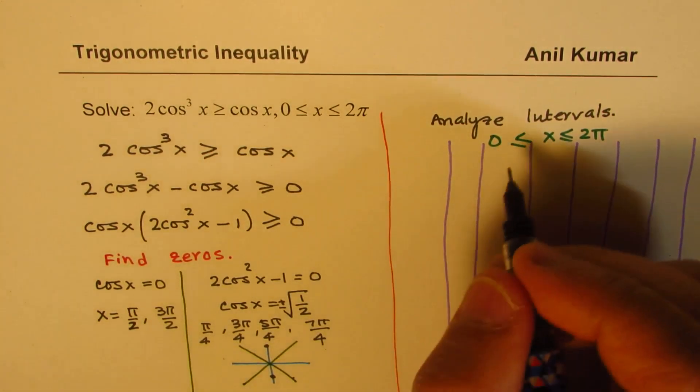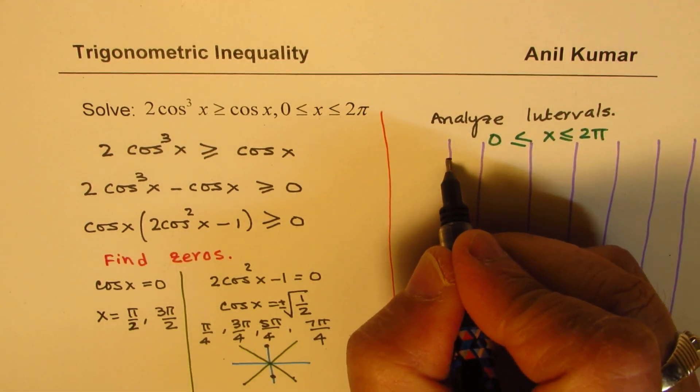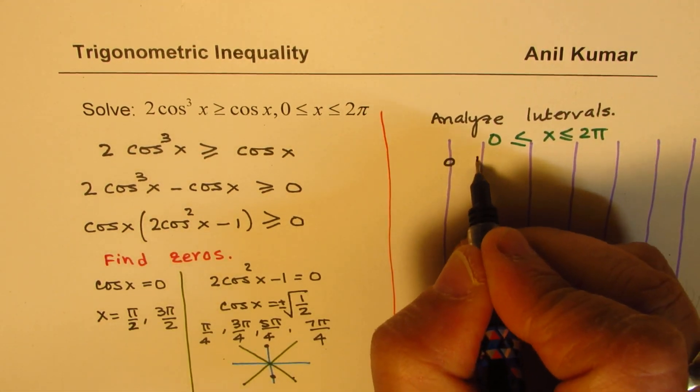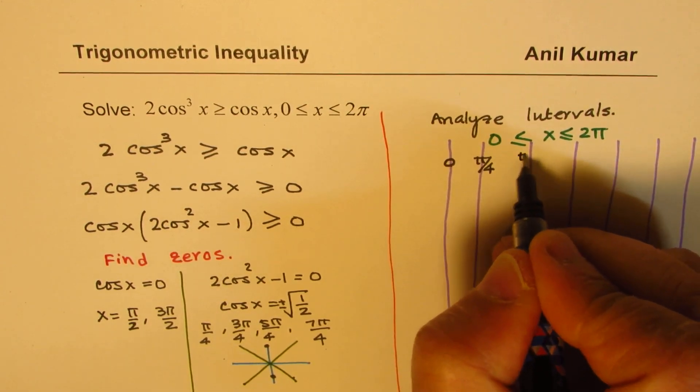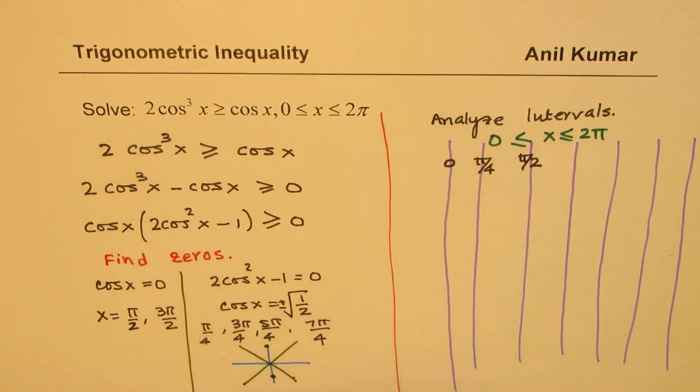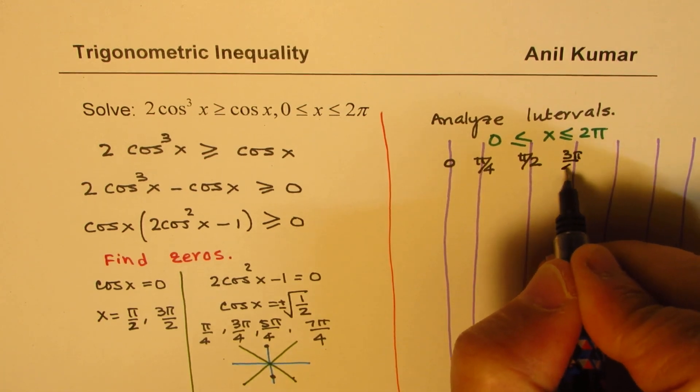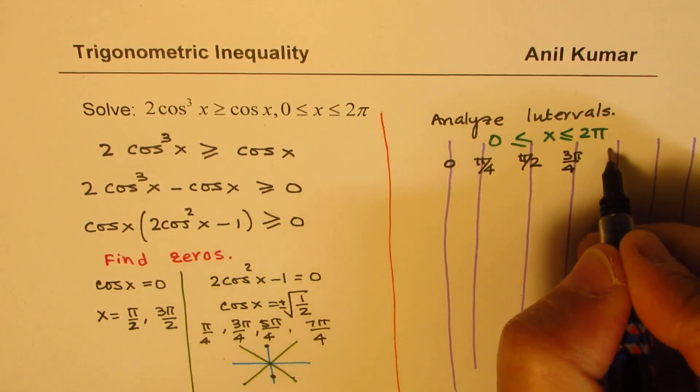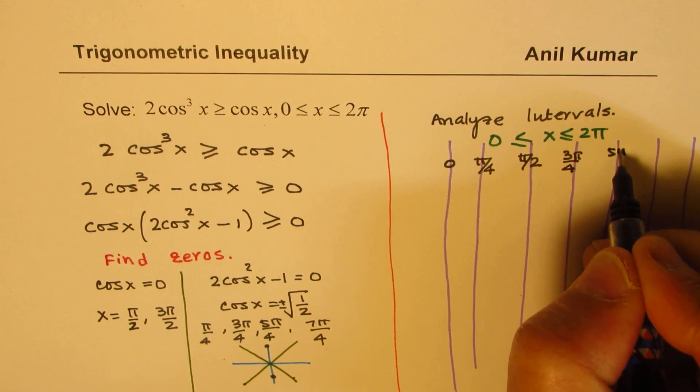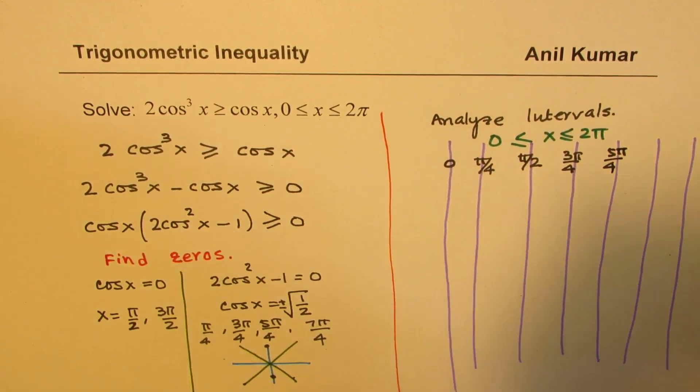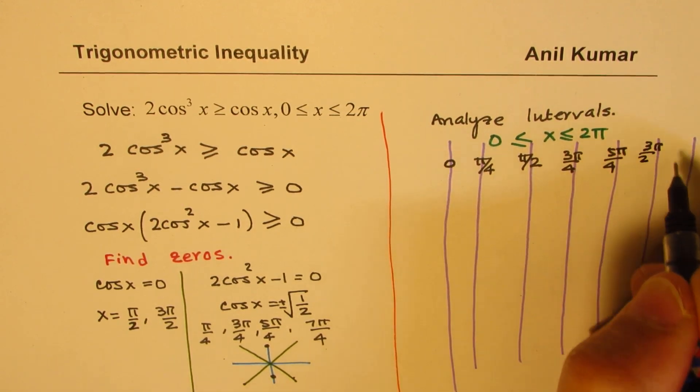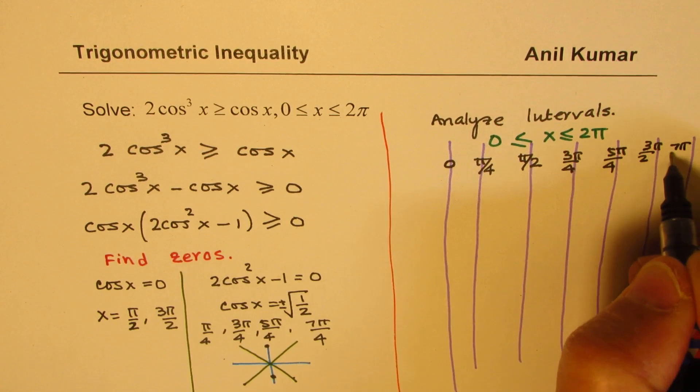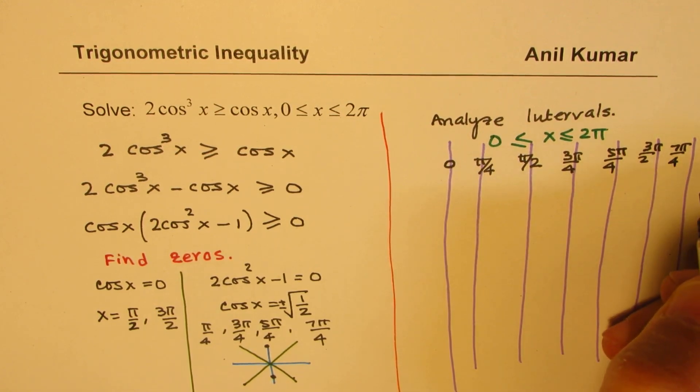Since we are working in the interval 0 to 2π, x value has to be between 0 to 2π. So let this be 0, where x = 0. And then we have π/4, π/2, 3π/4, 5π/4, 3π/2, 7π/4, and then 2π.